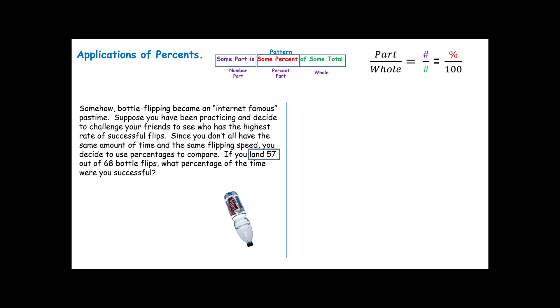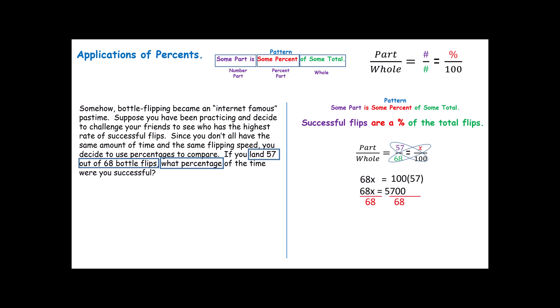I noticed that we land 57 out of a total of 68. I also noticed they're asking me for the percentage. So when I go to set this up, my part is the number of successful flips, the ones I land, because they are going to be a percentage of the total flips. So when I go to set this up, the number I succeeded in landing was 57. I don't know the percent. That's what they asked me. And I know the total is 68. Again, this is the hardest part. From there on out, it's means extremes property. A little multiplication. Divide both sides by 68, and you get 83.832. You land about 83.8% of your flips. So I've got to go back and fix that little typo.